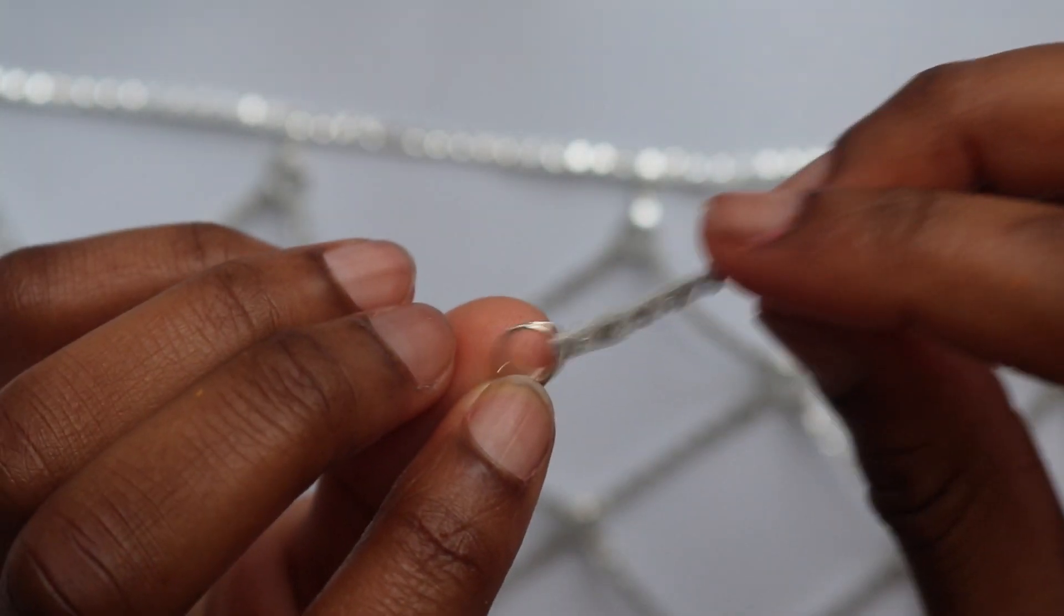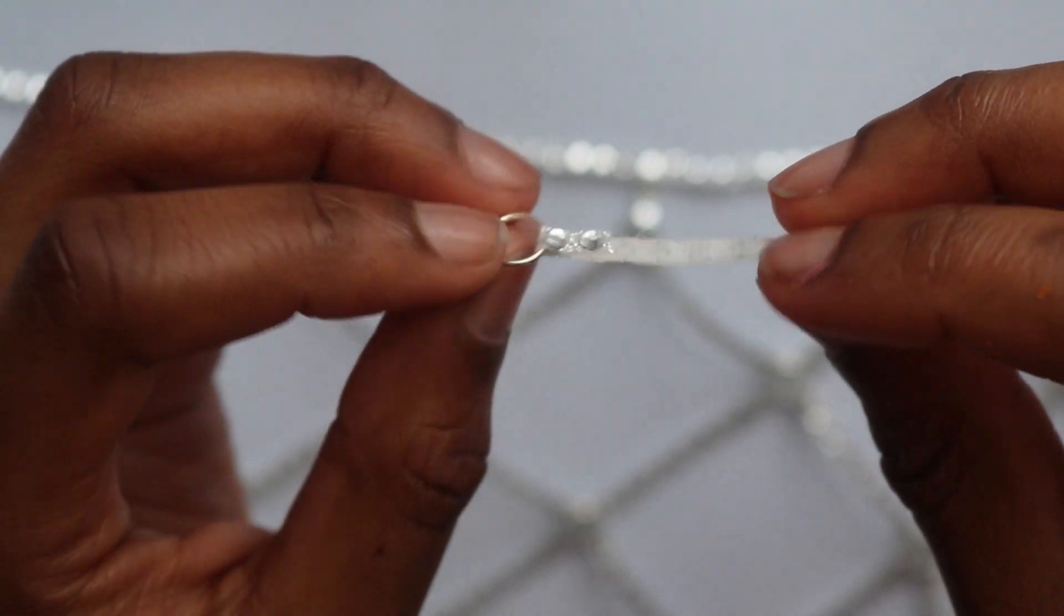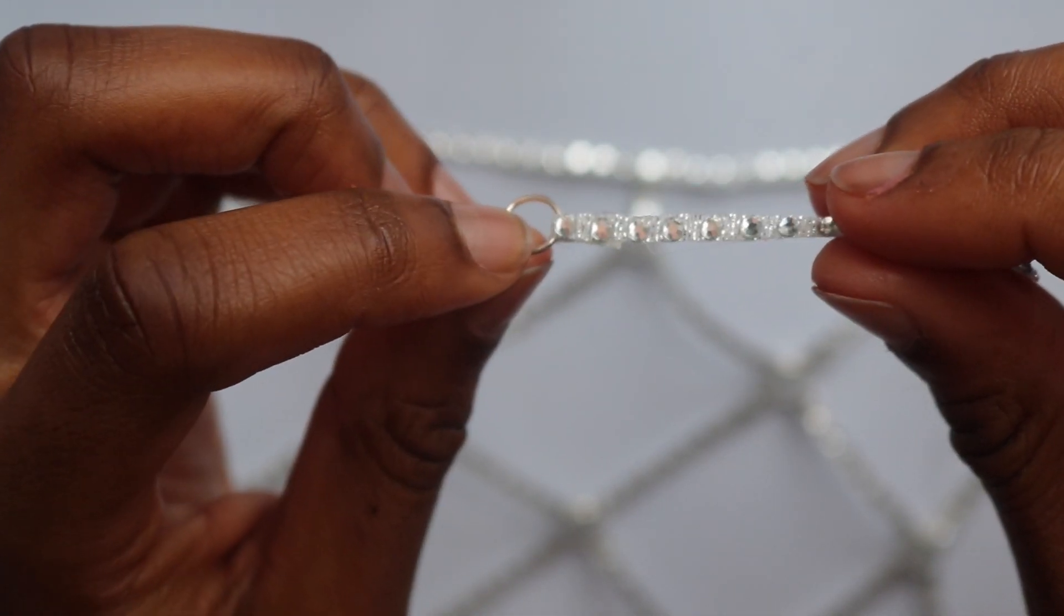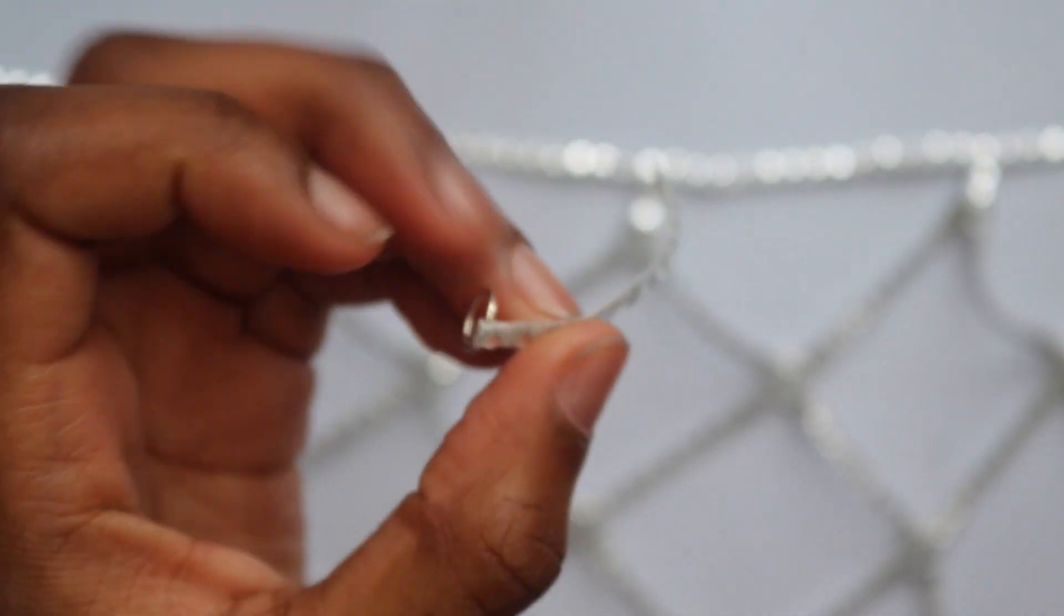After that you're just going to want to repeat that three more times so you're going to have a total of four rows of rhinestone on each jump ring. I forgot to show this also in the video.